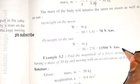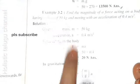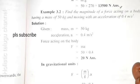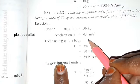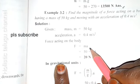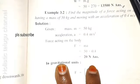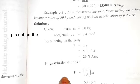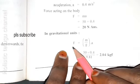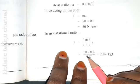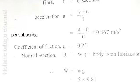Find the magnitude of the force acting on a body having mass of 50 kg and moving with an acceleration of 0.5 m/s². Here, gravitational force F equals M by G into A, so 50 into 0.4 divided by 9.81.